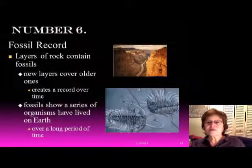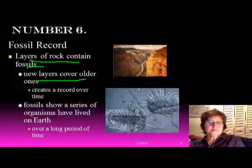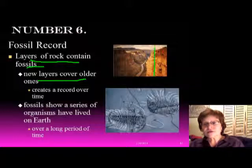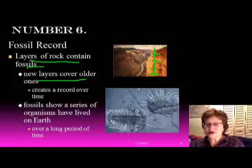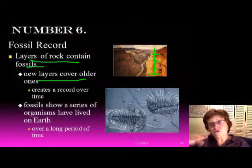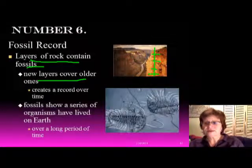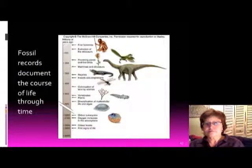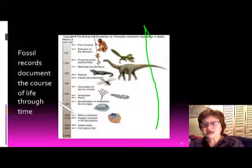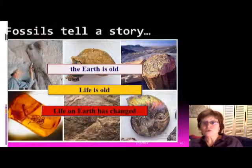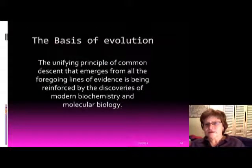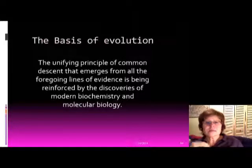Number six is the fossil record, which is a very important piece of evidence. The layers of rocks containing fossils — new layers cover older layers — create a record over time. If you go to the Grand Canyon, the fossils are different from layer to layer, basically recording evolution. It shows us how many different organisms have lived on Earth at what time period. The fossil record documents evolution through geologic time and tells us the story of how old the Earth is and how life on Earth has changed.